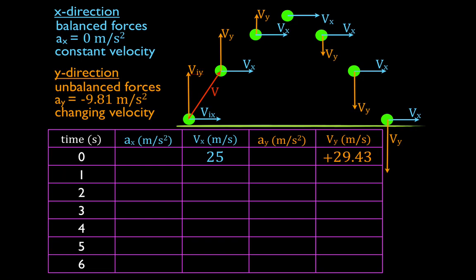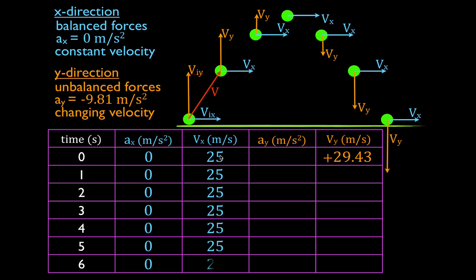Let's look at this table. Here's the time: zero through six seconds. The initial velocity in the x direction is 25 meters per second. The acceleration is zero because the forces are balanced, so I can write zero for acceleration at each time step. Since the acceleration is zero, the velocity is not changing — at each point in time in the x direction, the object is moving 25 meters per second.